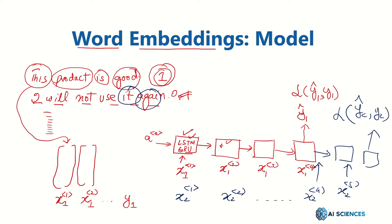So if sentences have different numbers of words, no problem — the recurrent neural network can handle that. All the blocks share parameters, and we're good to go. At test time, for example, if we now have a review: 'this looks great.'